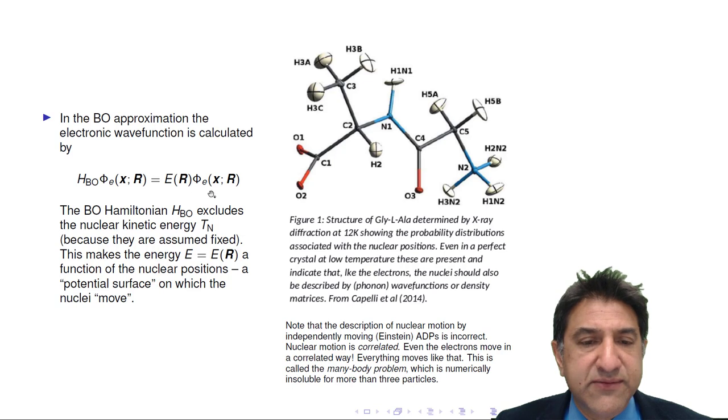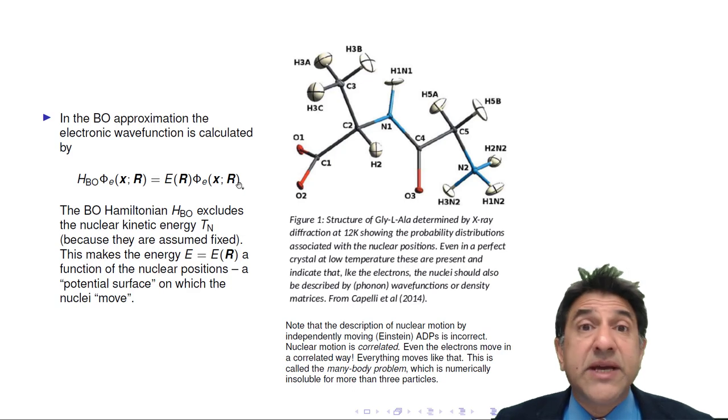And these coordinates capital R are fixed. What that means, of course, is that the energy of the system is a function of where we decide to put these nuclei. So E is a function of R. The energy eigenvalue in the Schrodinger equation becomes a function of the nuclear positions. So we call this E of R the potential energy surface.